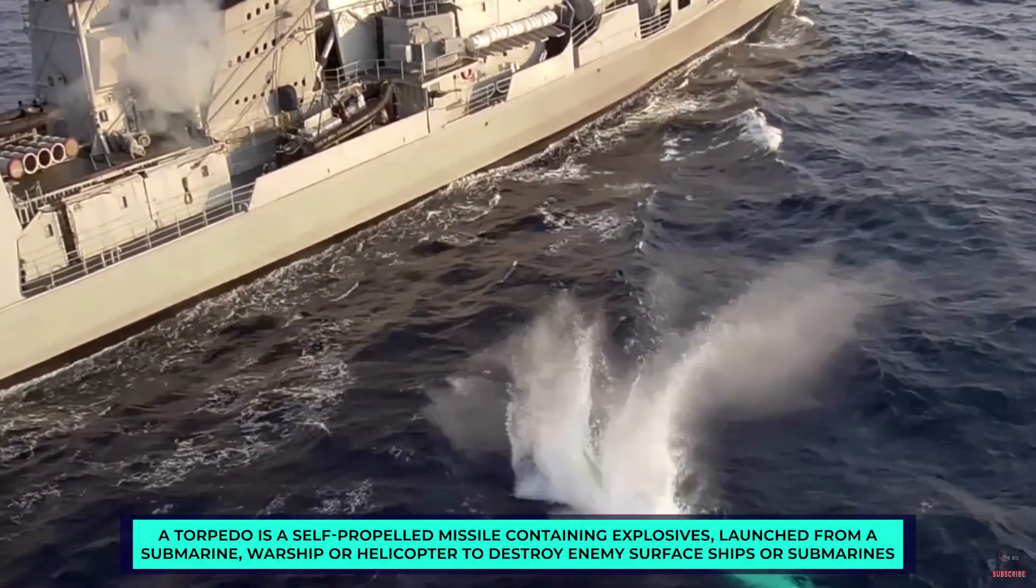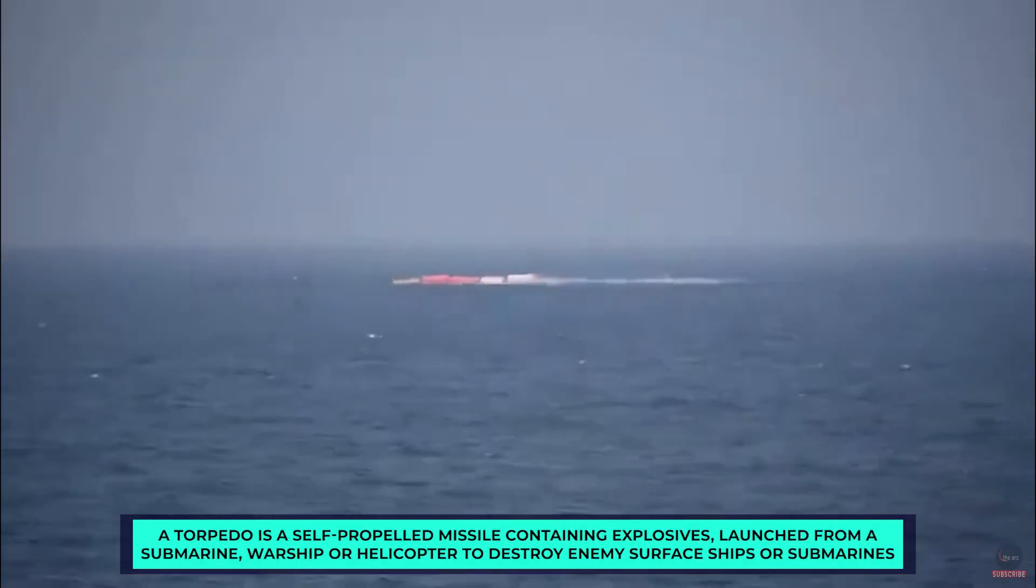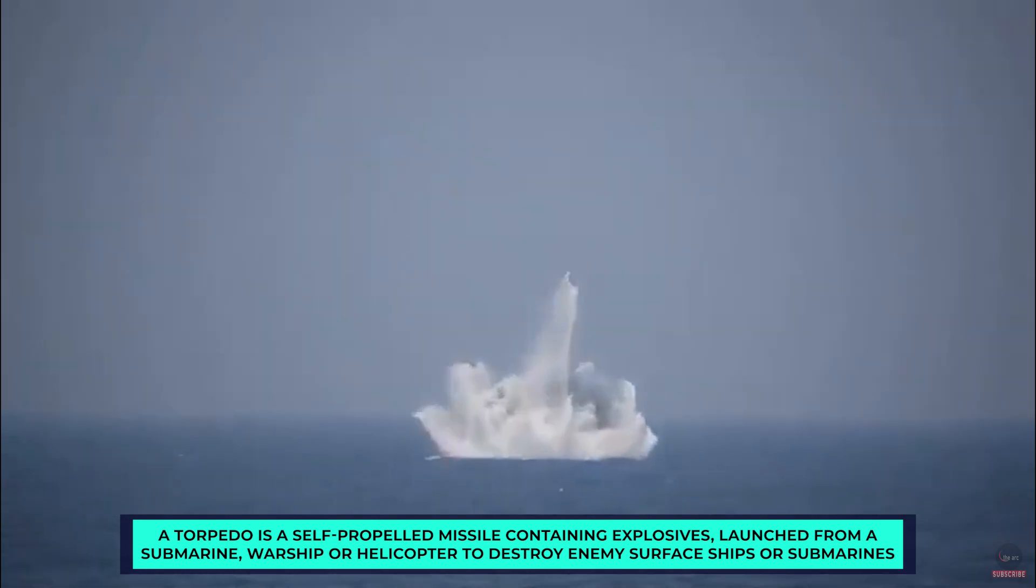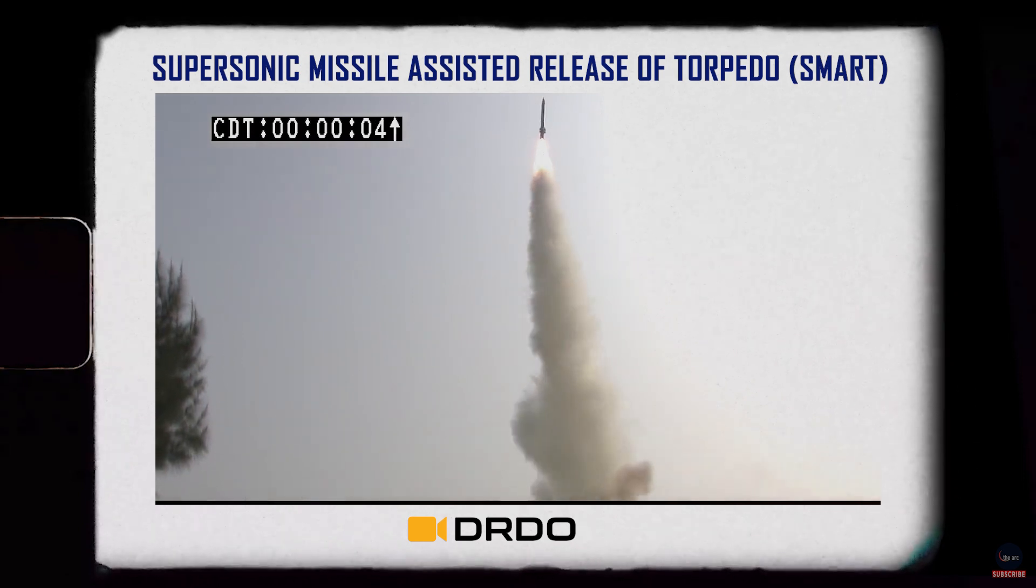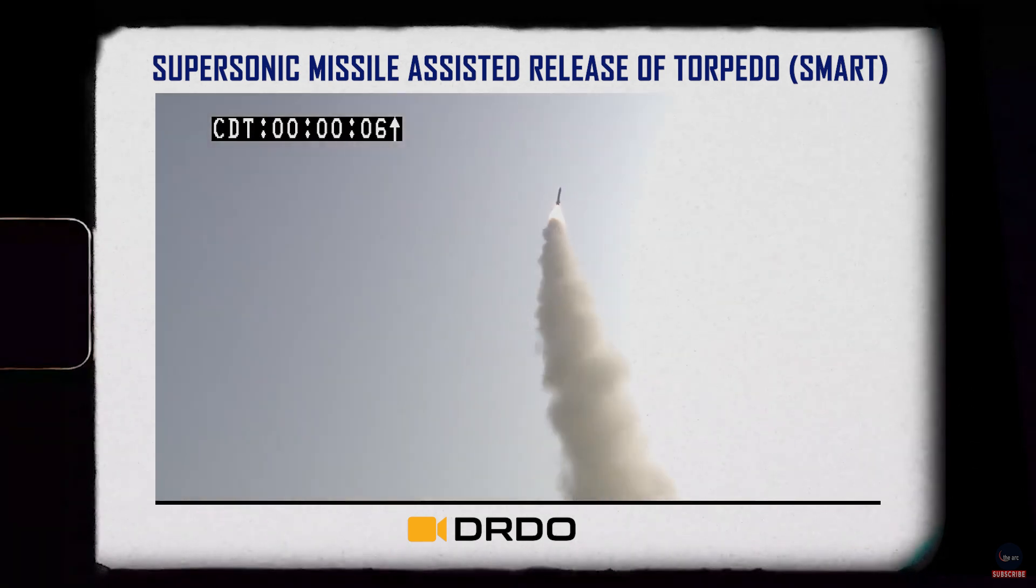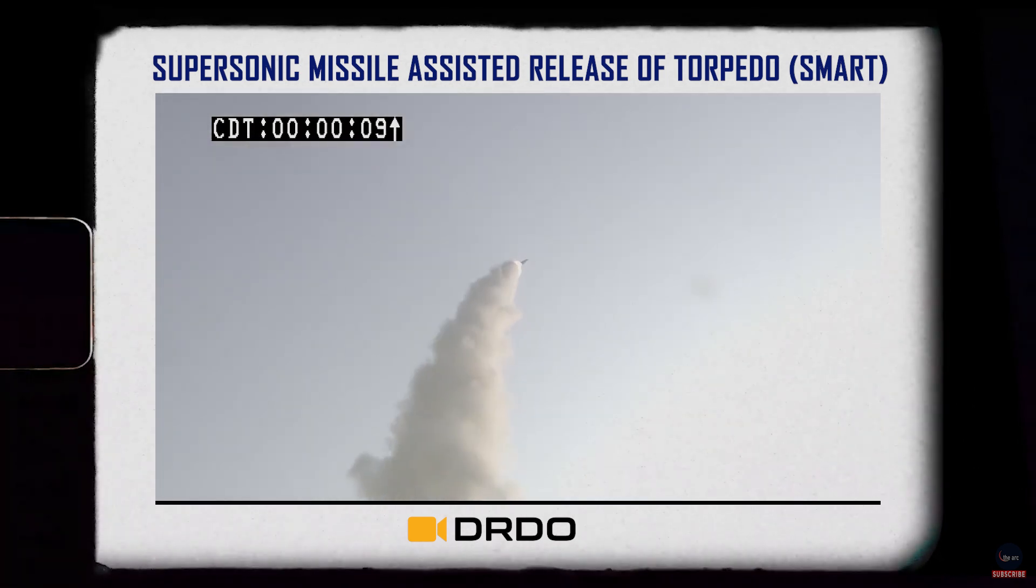The next missile is a unique one. The Supersonic Missile Assisted Release of Torpedo or SMART is a missile-based lightweight torpedo delivery system. A torpedo is basically a missile which is launched from a submarine or other warship to destroy enemy surface vessels or submarines. So the SMART is a hybrid weapon system which acts as a torpedo delivery system which is launched from land, not the sea. It was flight tested from the APJ Abdul Kalam Island on May 1, 2024. It has a range of 650 km to hit an enemy ship or submarine. The missile will significantly enhance the anti-submarine warfare capability of the Indian Navy, far beyond the conventional range of lightweight torpedoes.